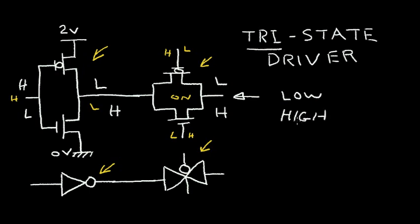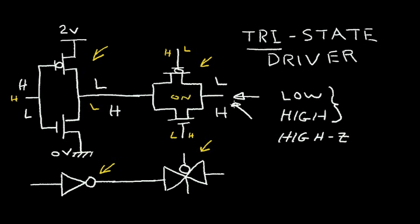There's a third state that the output can be in. If the switch is in the off condition, there's no conduction, so the output of the inverter is isolated from this node. That is called the third state, the high-Z state, or the high-impedance state. So the output can exist in three states: when the switch is closed, the output is either high or low; when the switch is open, the output is disconnected and said to be in the high-Z or high-impedance state.